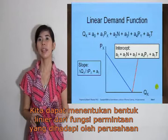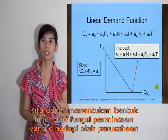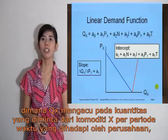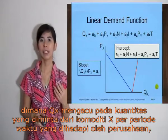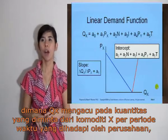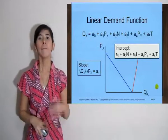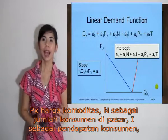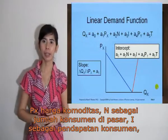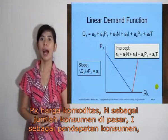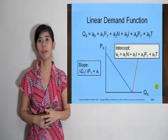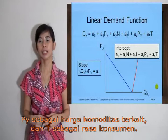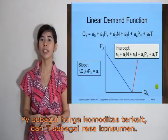We can specify the linear form of the demand function faced by a firm, where QX denotes the quantity demanded of commodity X per time period faced by the firm; PX is the price of the commodity; M is the number of consumers in the market; I is consumer income; PY is the price of related commodities; and T is consumer tastes.